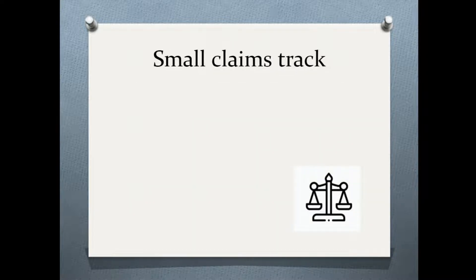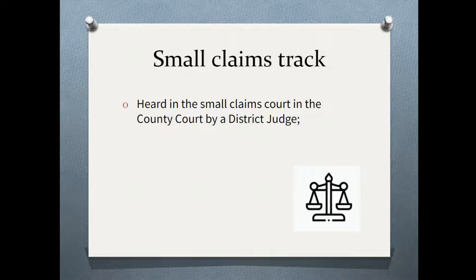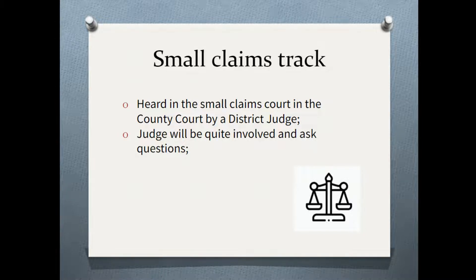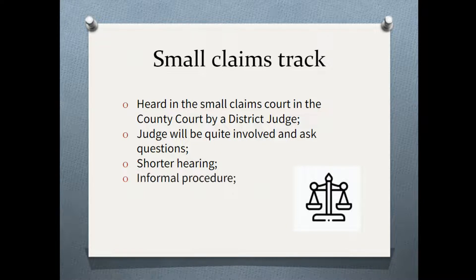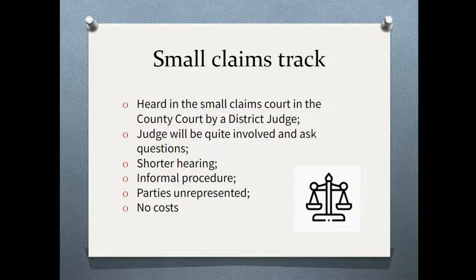Once allocated to a track, you'll know which court you're in. On the small claims track — for claims worth less than £10,000, or £1,000 for personal injury — you'll be in the small claims court, which is part of the county court, heard by a district judge. The judge will be quite involved, asking questions. The hearing is no more than four hours, the procedure is very informal, parties don't tend to have lawyers, and no costs will be awarded — so even if you lose, you do not have to pay the other side's costs.